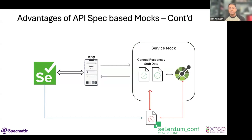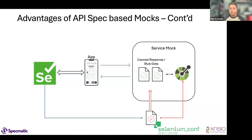Having your tooling such that your stub data is never stale is super critical. That way your apps are always dependable. Immediately when the service spec evolves, your service mock evolves along with it and gives you immediate feedback. That's an important piece we had to tackle.